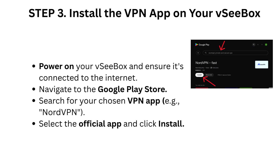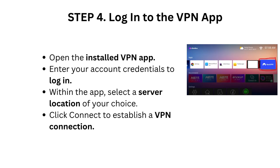Step 3: Install the VPN app on your VCBox. Power on your VCBox and ensure it's connected to the internet. Navigate to the Google Play Store, search for your chosen VPN app (e.g., NordVPN), select the official app, and click Install.